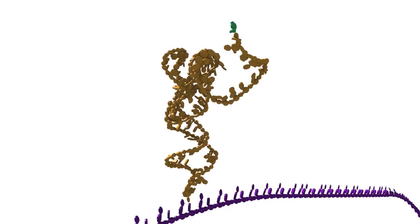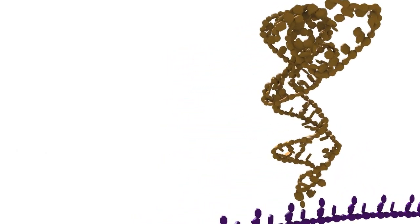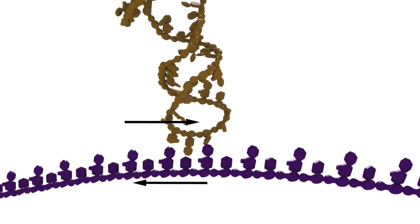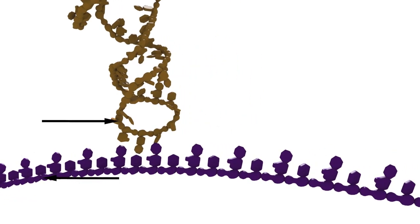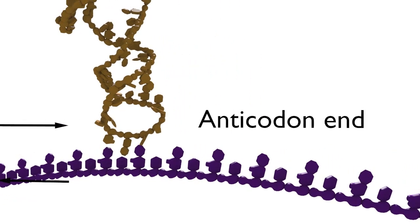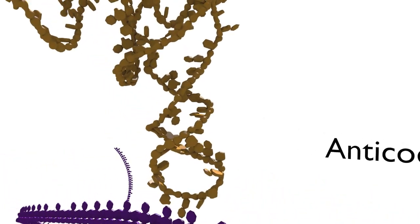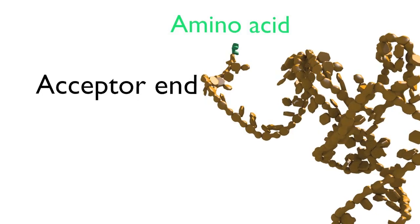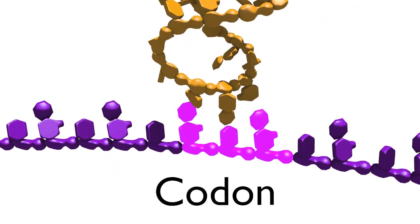tRNAs are bifunctional in nature, with three nucleotides poised at one end of the molecule to read the mRNA template in an anti-parallel fashion. This is referred to as the anticodon end of the tRNA. At the other end of the molecule is the acceptor end, where an activated amino acid is attached. This amino acid corresponds specifically to the identity of the codon being read.